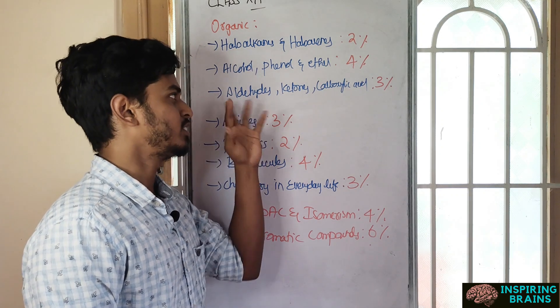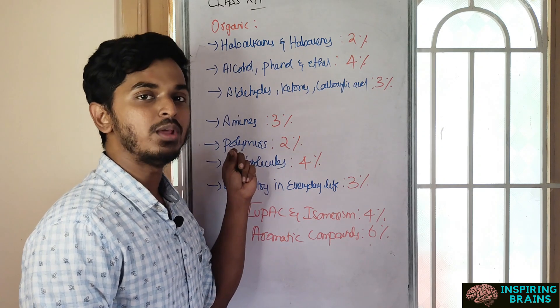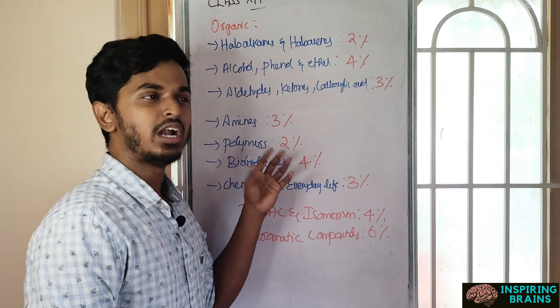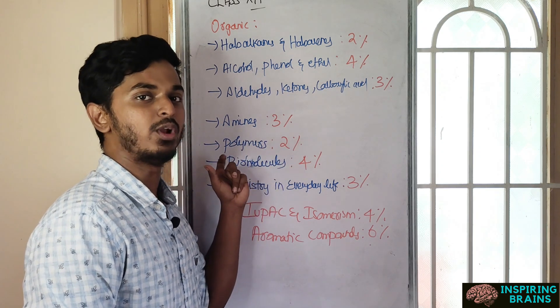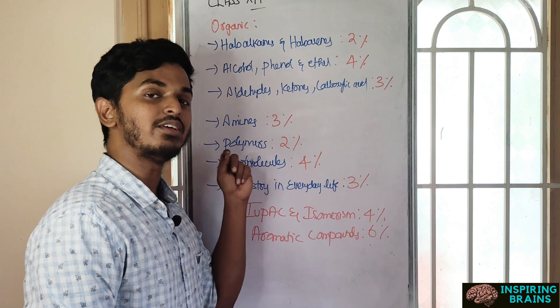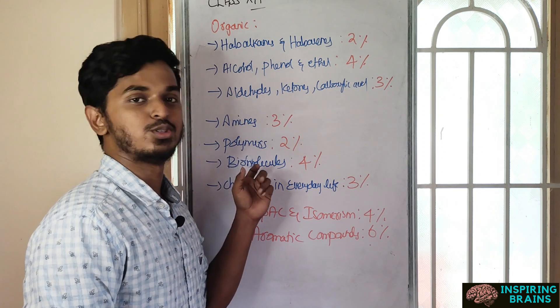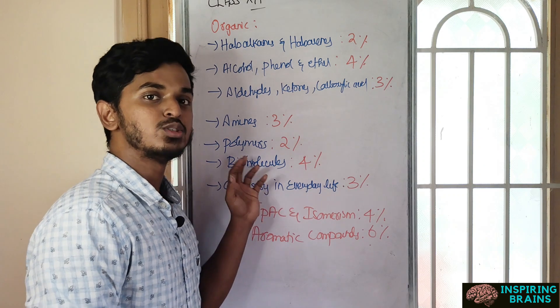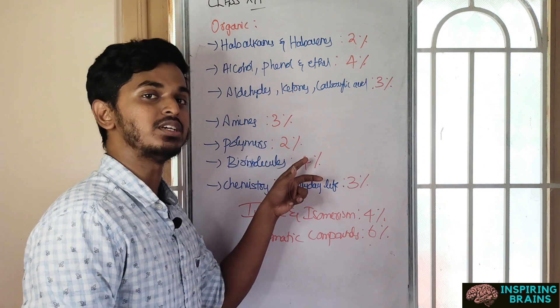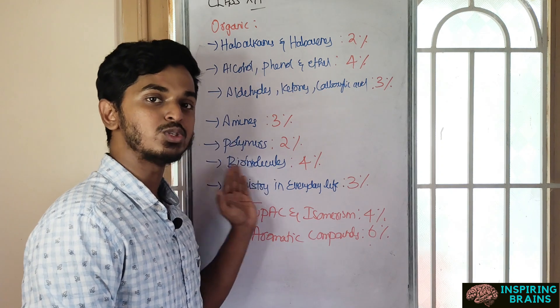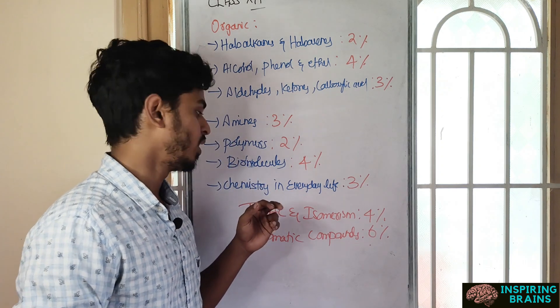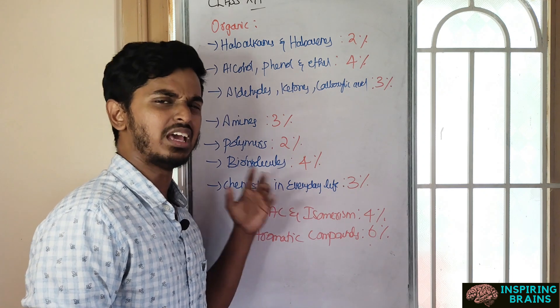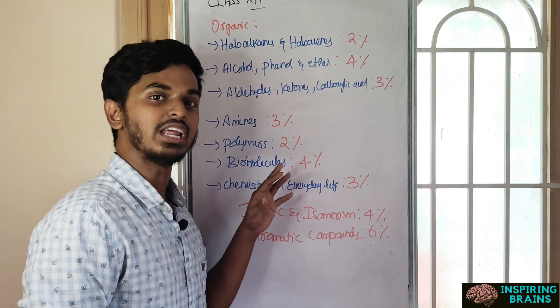Polymers - direct questions, more or less theoretical based, no indirect way in polymers. Biomolecules - already we have biomolecules in biology also, so it's more chemistry and carries 4 percentage. Don't lose this because you can correlate and study in an easier way. Chemistry in everyday life - very easy theoretical unit, anyone can study at any point of time.